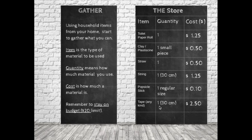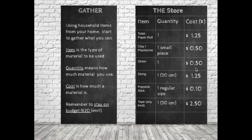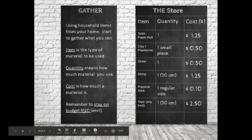One 30-centimeter length of tape — this could be any kind of tape that you want. Cost is how much a material is: $1.25, $0.50, $0.50, $1.25, $0.10, $2.50. Remember to stay on budget.